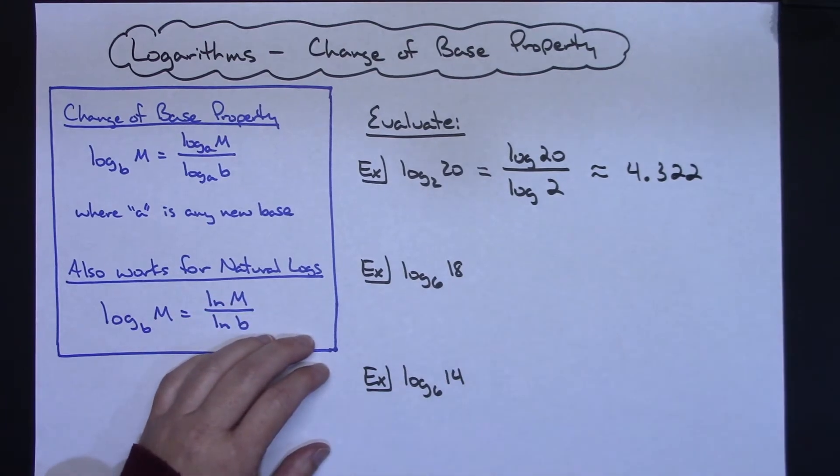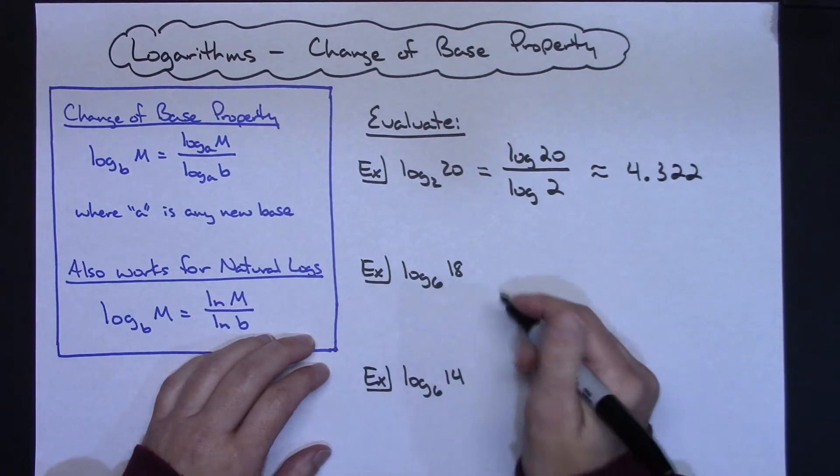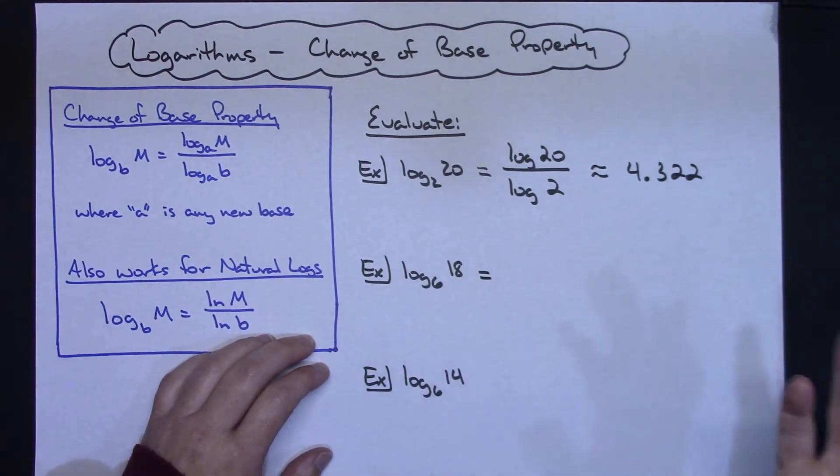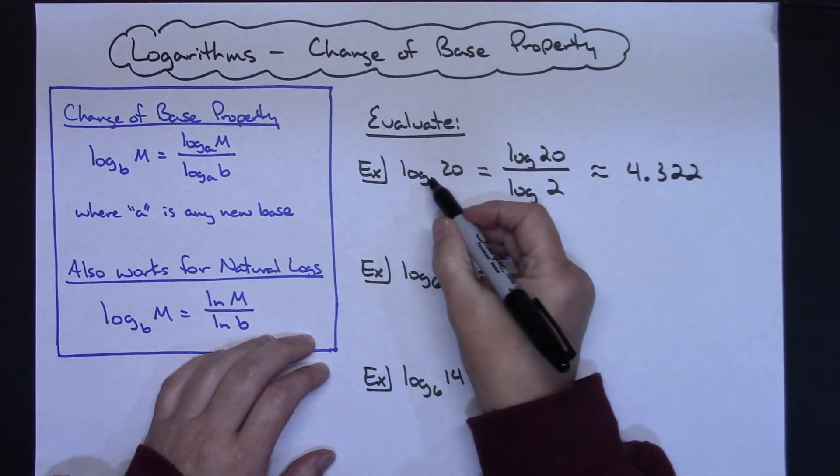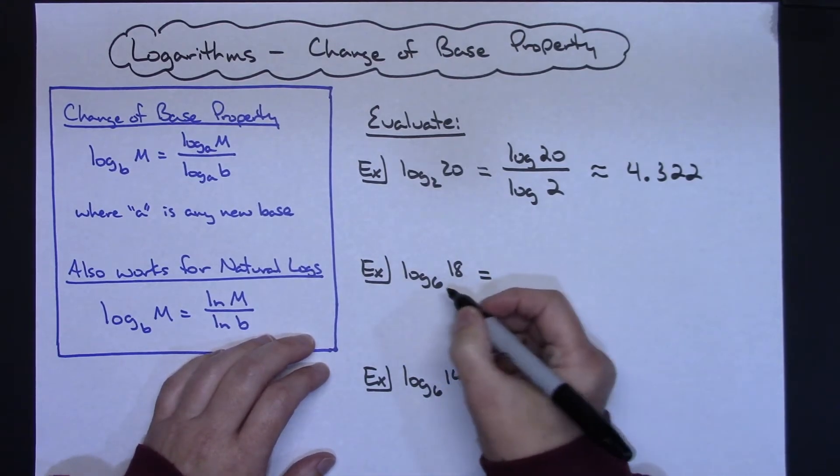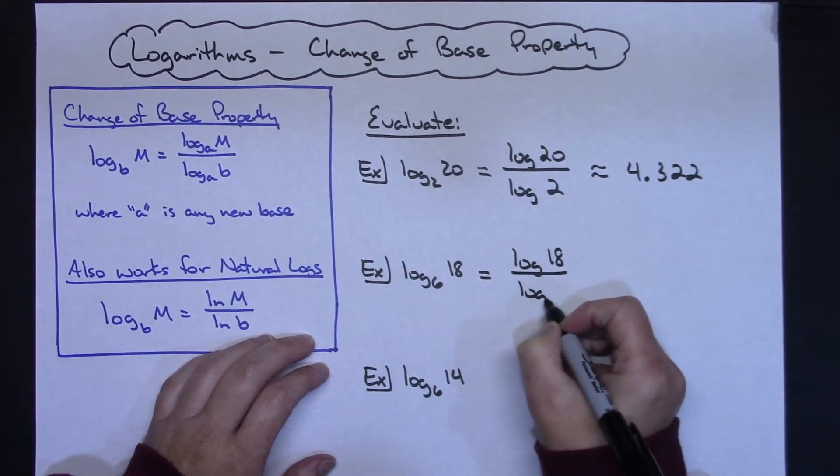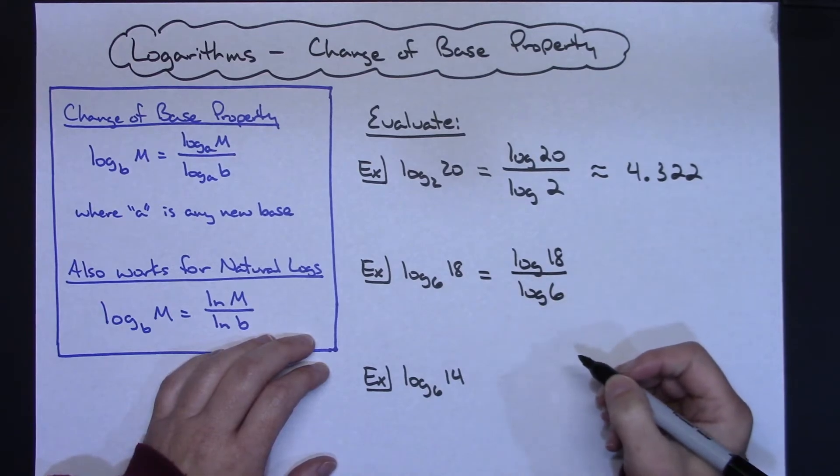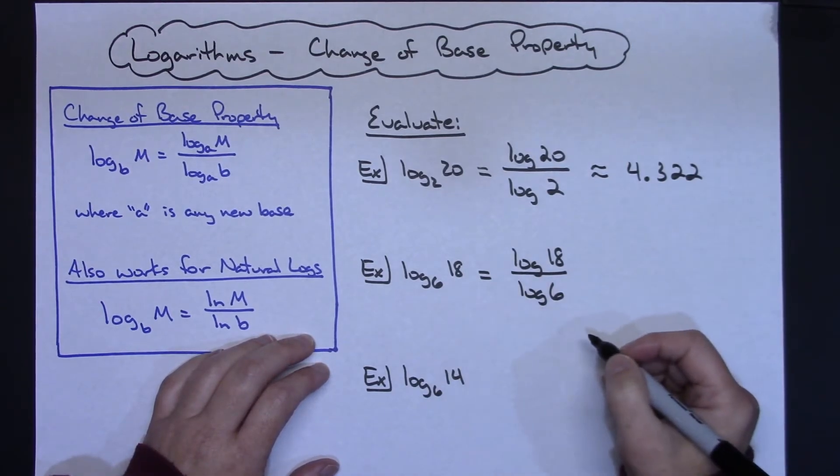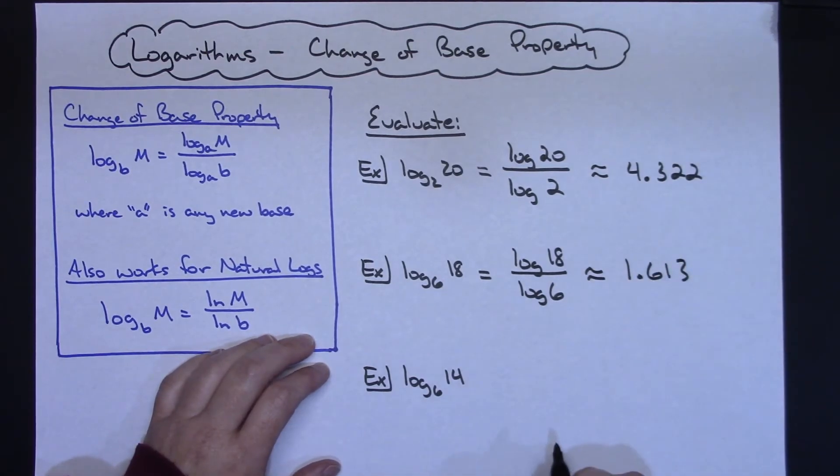So it's pretty simple concept. Just take the log of 18 over the log of 6. Again, you could choose any base you wanted, but the whole point is to get away from that base 6 so that you can easily put it in your calculator. So this would be the log of 18 over the log of 6, choosing that common base of 10 so that I could plug it into the calculator, and then I get 1.613 on that one. You can get your calculator out and hit pause on the video and verify that if you need to.